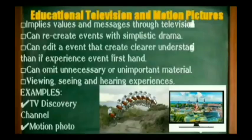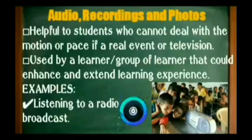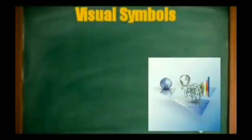The next level is educational television and motion pictures. This implies values and messages through television and films. Learners can recreate events with simplistic drama and can edit events to create a clearer understanding than if the event were experienced firsthand. The next level is audio recordings and photos. Still pictures, recordings, and radio are visual and auditory devices that can be used by a learner or group of learners to enhance and extend learning experiences.